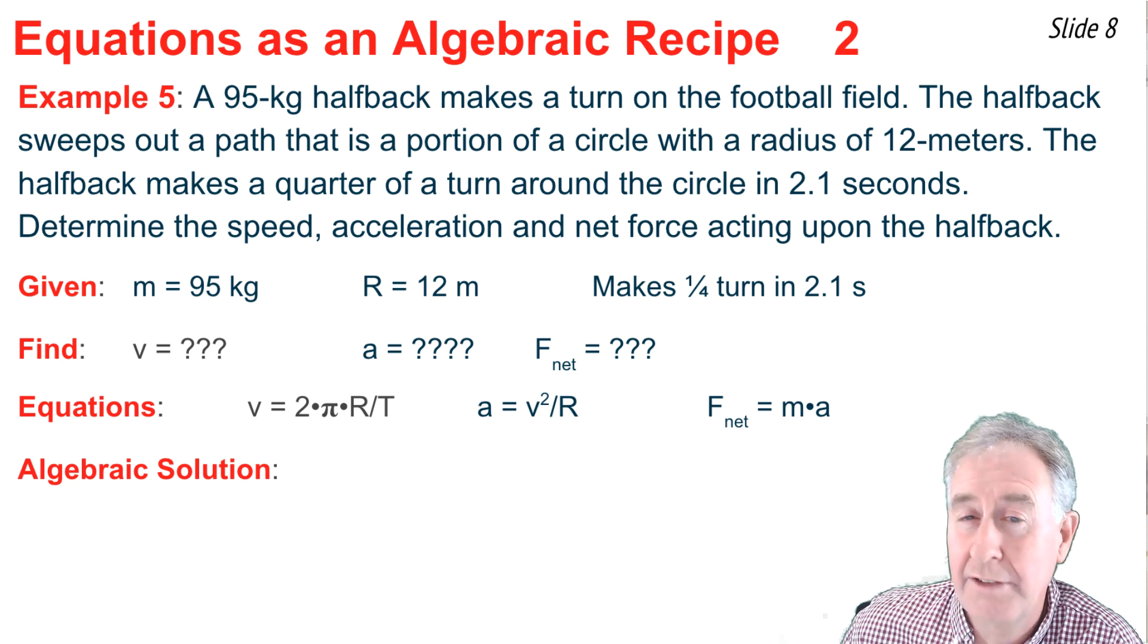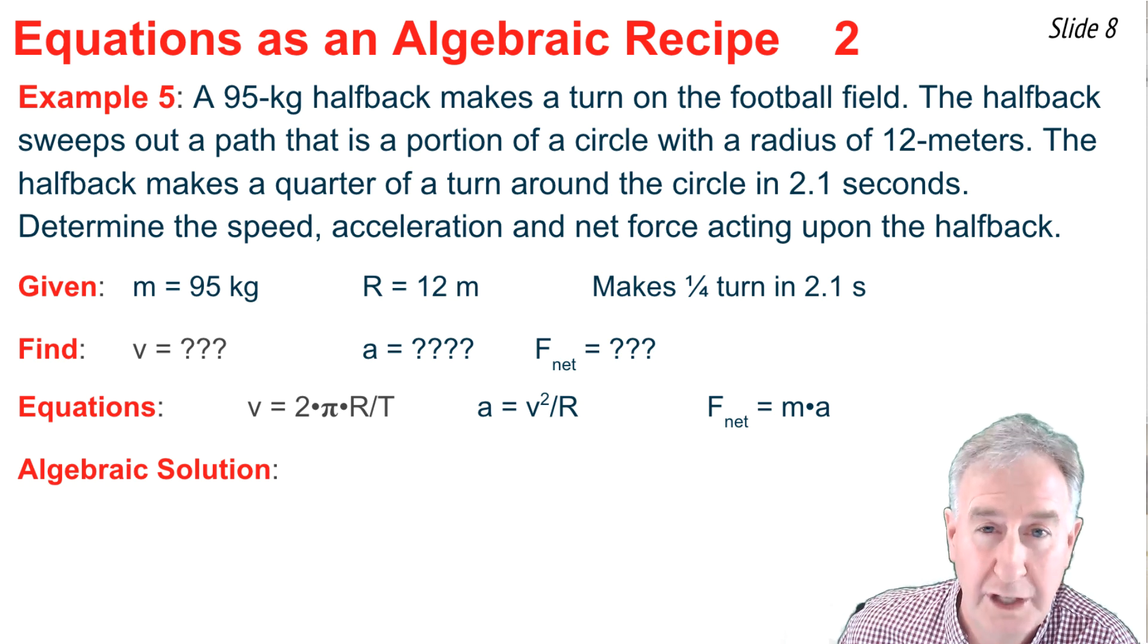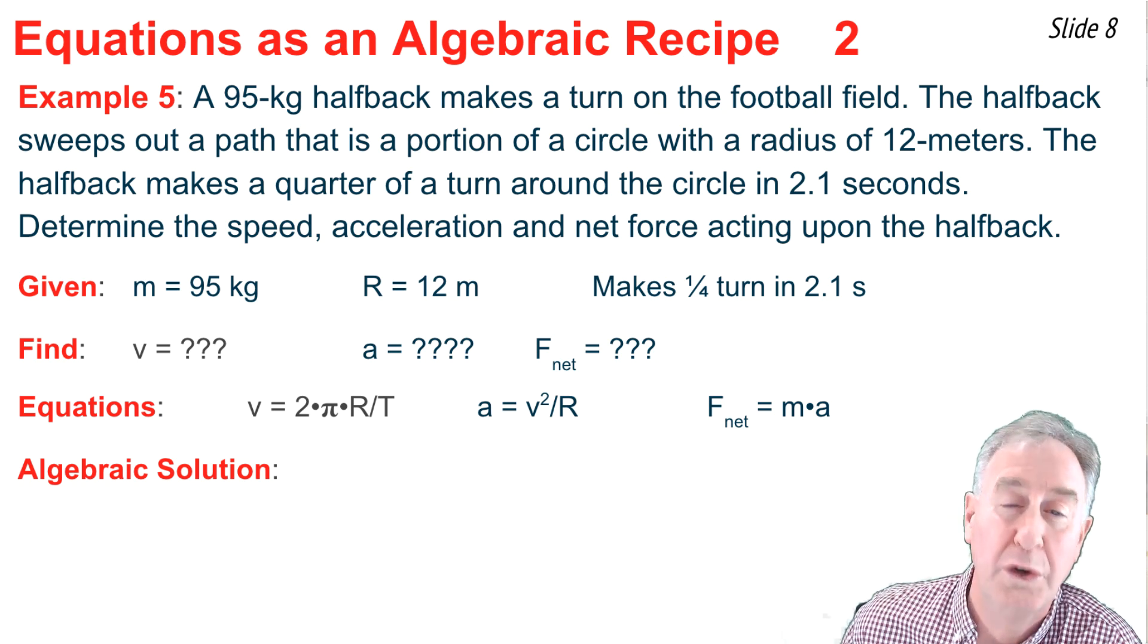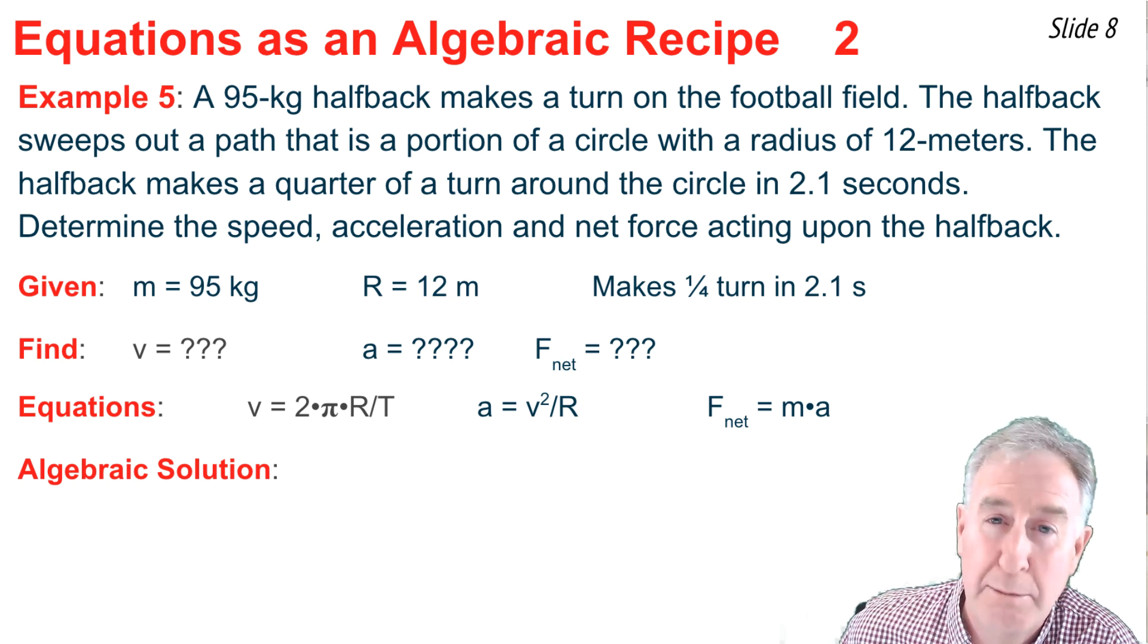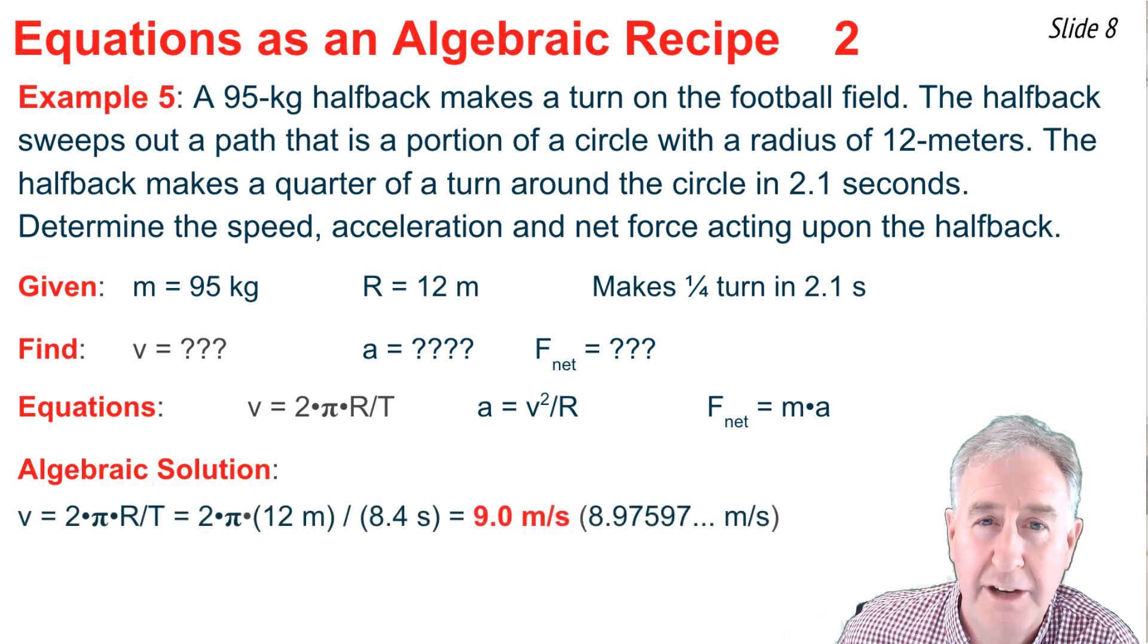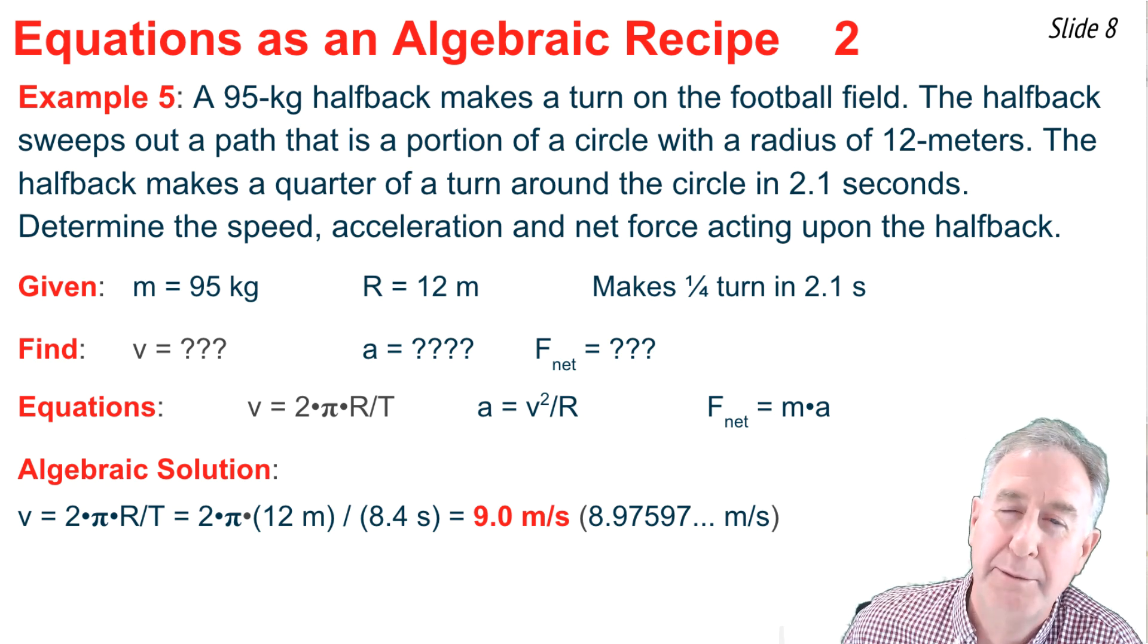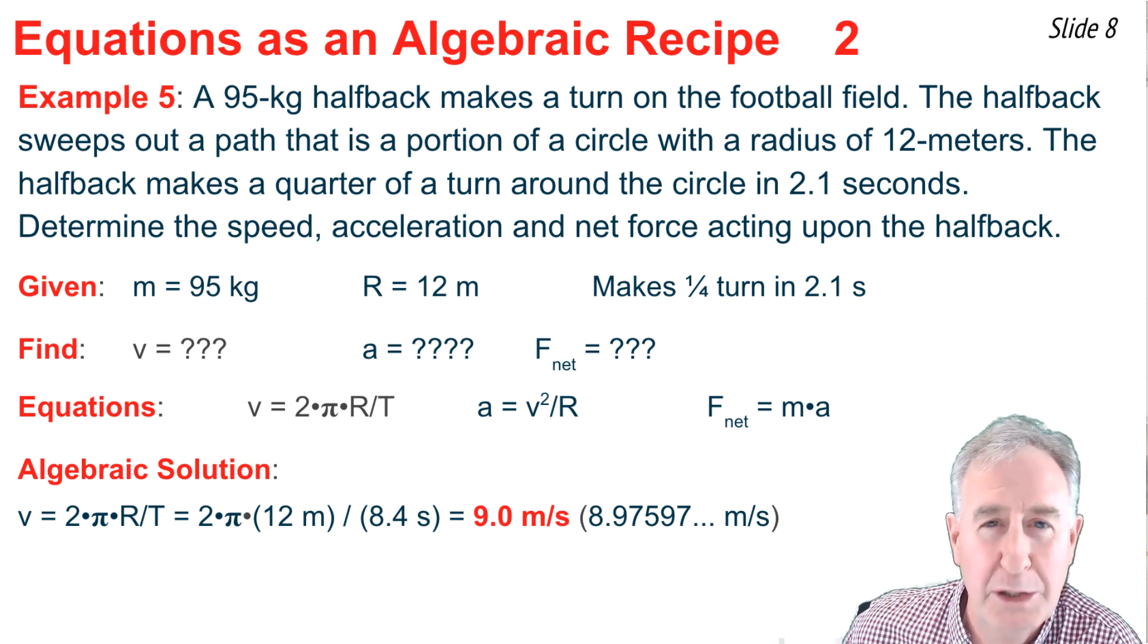When it comes to calculating the v, I want to know the period. It's not stated, but I can do some reasoning here, because the halfback does a quarter of a turn in 2.1 seconds. If the halfback kept the pace up and did a full circle around the circle, then it would be 4 times as much time in a period of 8.4 seconds. That's 2.1 times 4. Now I can solve for v. It's 2 times π times r divided by t, 2 times π times the 12 meters divided by the 8.4 seconds, and I end up with just short of 9.0 meters per second.